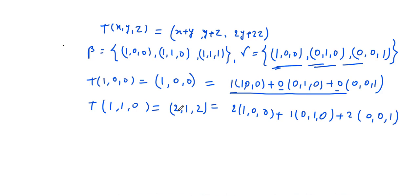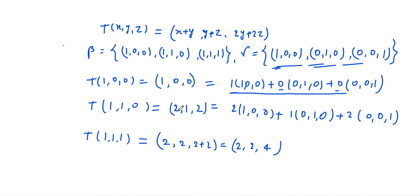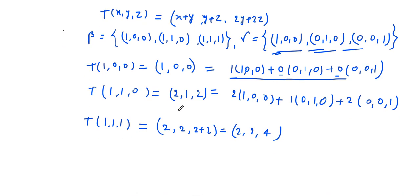For the third basis vector: T(1, 1, 1) = (1+1, 1+1, 2+2) = (2, 2, 4). Expanded along the standard ordered basis, this is 2·(1,0,0) + 2·(0,1,0) + 4·(0,0,1).